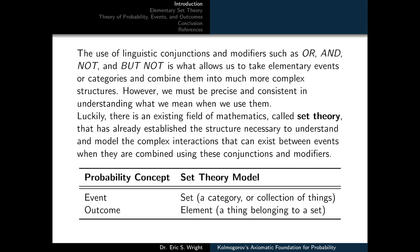The use of linguistic conjunctions and modifiers such as OR, AND, NOT, and BUT NOT is what allows us to take elementary events and combine them into much more complex structures. However, we must be precise and consistent in understanding what we mean when we use them. Luckily, there is an existing field of mathematics called set theory that already established the structure needed to understand and model the complex interactions that can exist between events when they are combined using these conjunctions and modifiers.